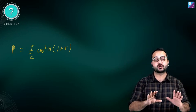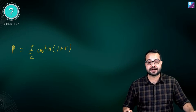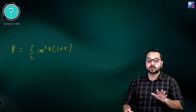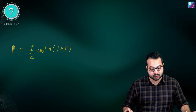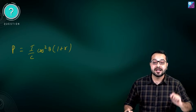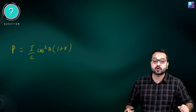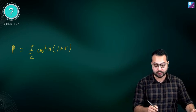Trust me, I am going to make sure that you don't forget it. So what is the radiation pressure? It is I/C × cos²θ × (1+r). Now we are going to talk about special cases.